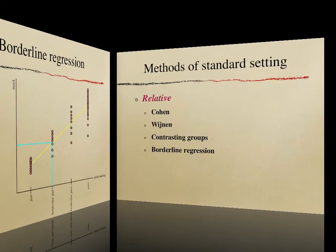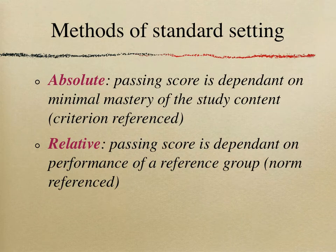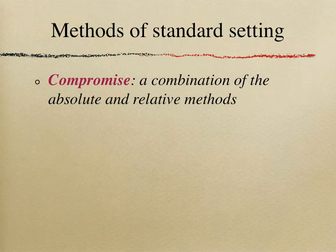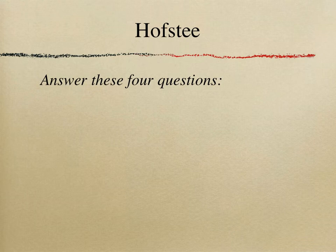We have now covered some of the most famous relative methods of standard setting. You might note that both absolute and relative methods each have their own advantages and disadvantages, so some educationalists have combined both approaches to create a third category called compromised methods of standard setting — essentially a combination of the two. The most famous of these compromised methods is the Hofstee method, which I will now go through.